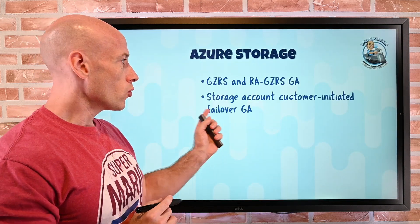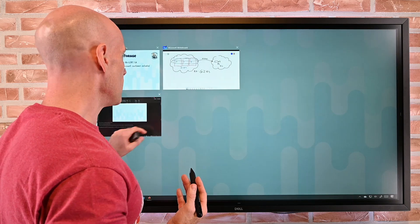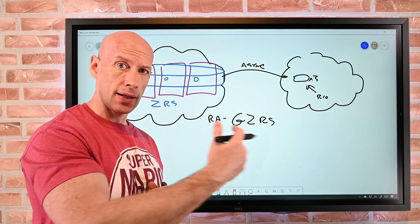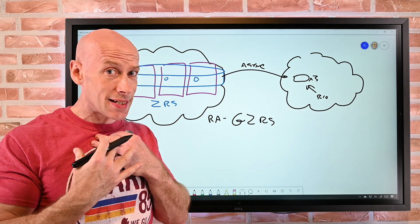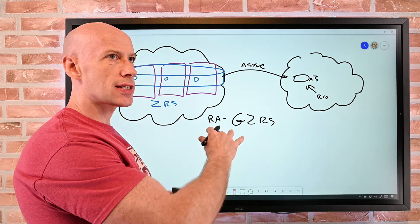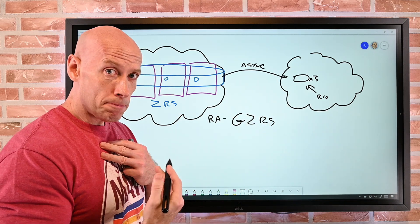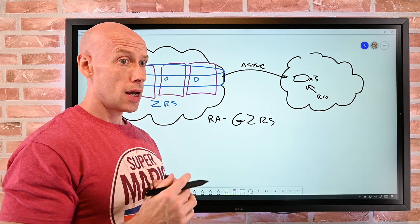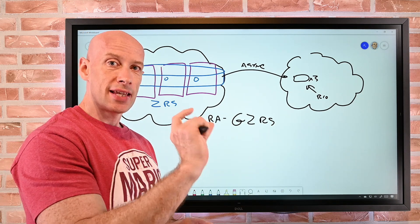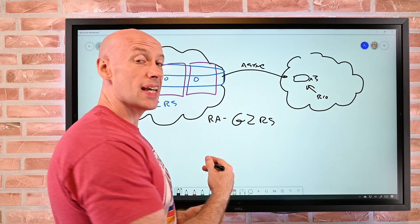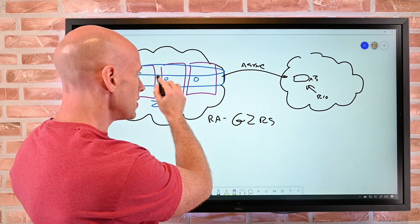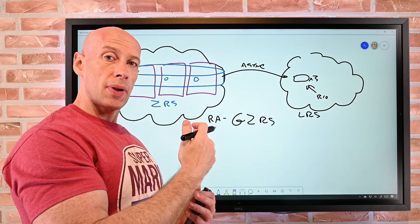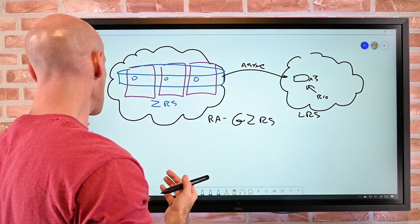Also now GA: storage account customer-initiated failover. Ordinarily, this pairing would only fail over if there was a region outage that Microsoft decided to fail over. Now as the customer I can initiate that failover myself. I can go in and say 'I want to initiate a failover.' It will show me the last sync time — because it's async, there will be data loss since that time. If I say go ahead, it flips the DNS so my storage account points to the secondary and I can access it; it will be LRS. If I want to reverse the replication, I switch it back to GRS and it starts replicating the other way.